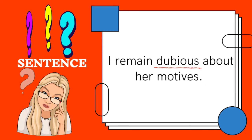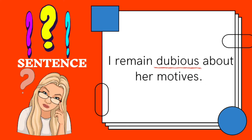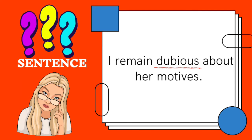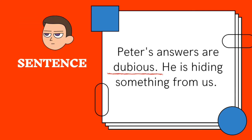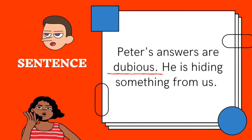Sentence: I remain dubious about her motives. Sentence: Peter's answers are dubious; he is hiding something from us.